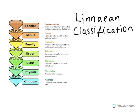Linnaean classification is a way of classifying different species using a Latin name. And the reason they use Latin, even though nobody speaks Latin anymore, is because it helps with communication.